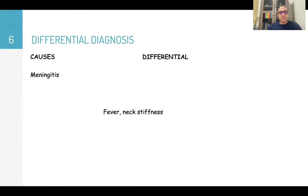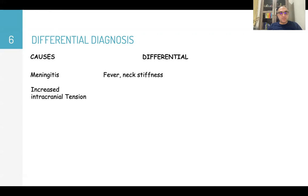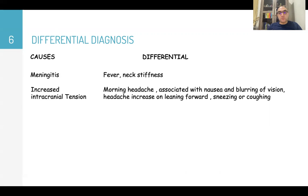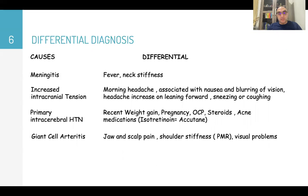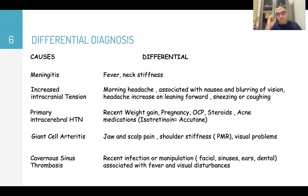Meningitis is associated with fever and neck stiffness. Increased intracranial tension presents with morning headache, nausea, blurring of vision, and headache worsened by leaning forward, sneezing, or coughing. Idiopathic intracranial hypertension risk factors include recent weight gain, pregnancy, oral contraceptive pills, steroids, and acne medication like isotretinoin. Giant cell arteritis presents with jaw and scalp pain, shoulder stiffness, association with polymyalgia rheumatica, and visual problems. Cavernous sinus thrombosis risk factors include recent infection or manipulation of the face, sinuses, ears, or dental operations, with fever and visual disturbances.